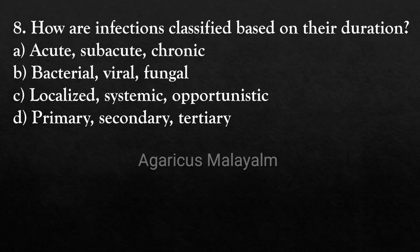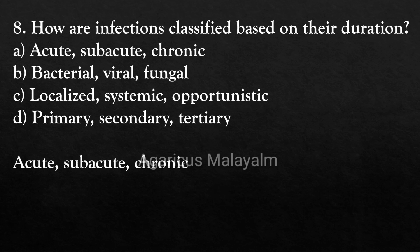Eighth question: How are infections classified based on their duration? Option A: acute, subacute, chronic. Option B: bacterial, viral, fungal. Option C: localized, systemic, opportunistic. Option D: primary, secondary, tertiary. Correct answer: Option A, acute, subacute, chronic.